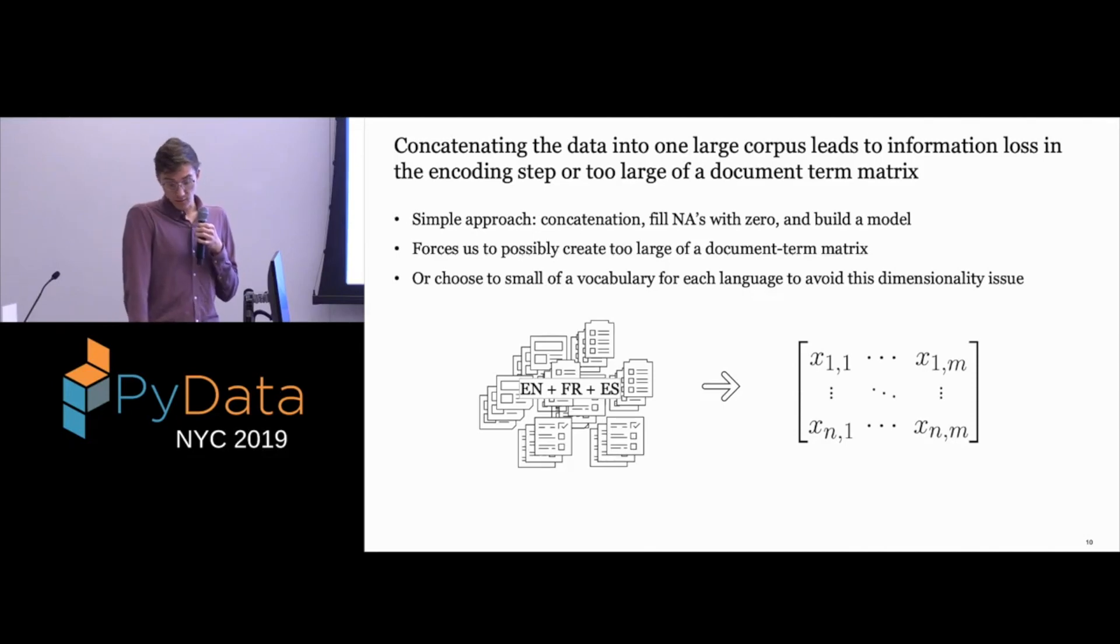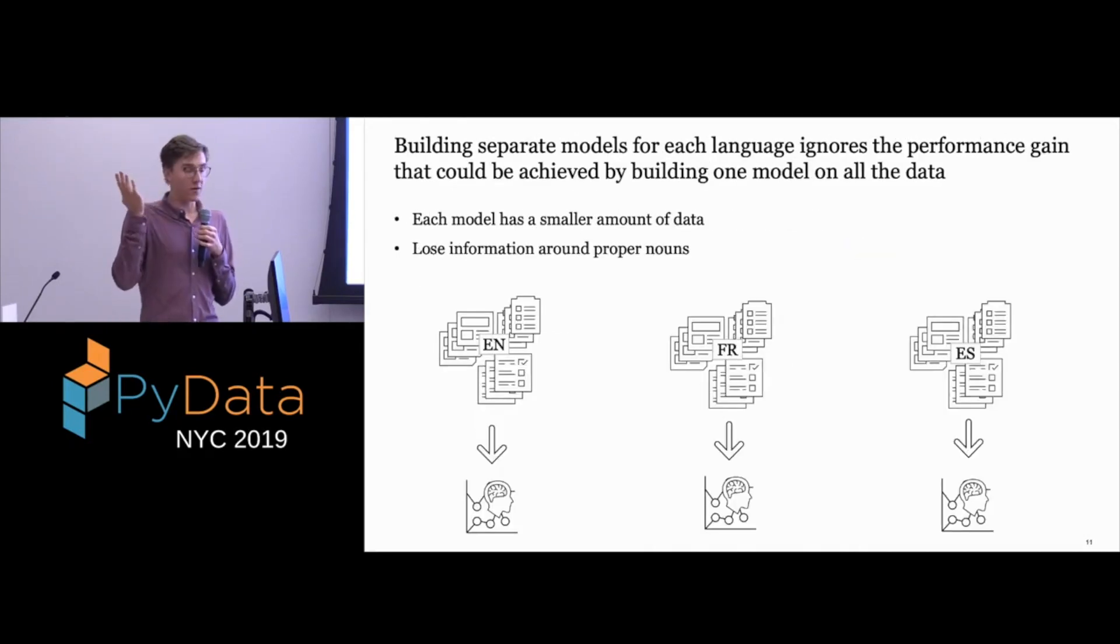So what else could we do? We could just build a separate classifier for every language and then just combine the results. This runs into the problem that every classifier that you're building now has less data, and you're losing information around proper nouns or maybe cognates that are shared across all of the languages that mean the same thing. Like if we're talking about PyData in Spanish, it still means the same thing.